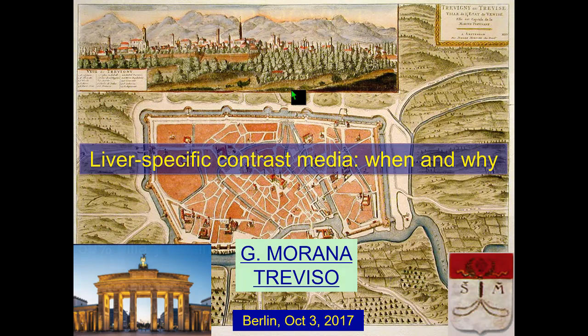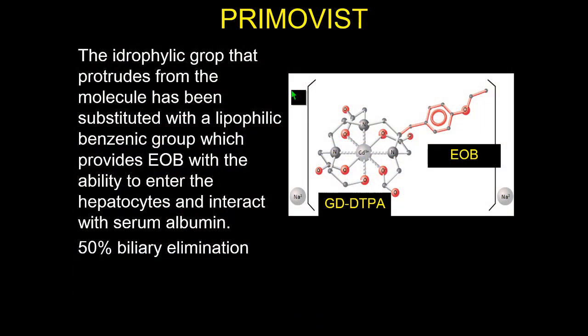Thank you everybody for being here. We are dealing with liver-specific contrast agents — PrimaVista, also known by trade names EOB or PrimaVista. All are linear with a side branch, and this side branch allows these contrast agents to be taken up by the hepatocytes via a special mechanism we will discuss.